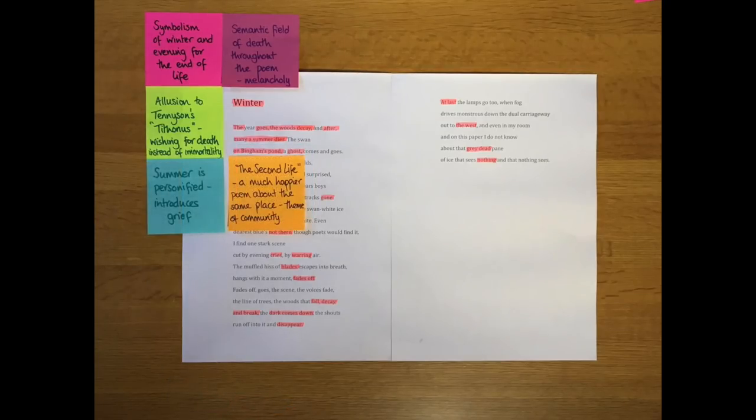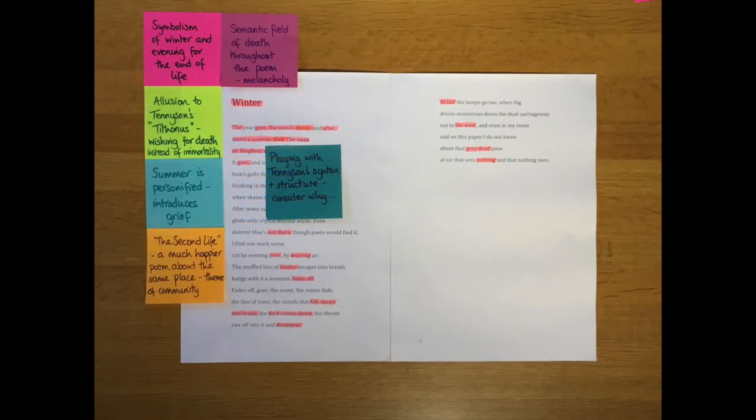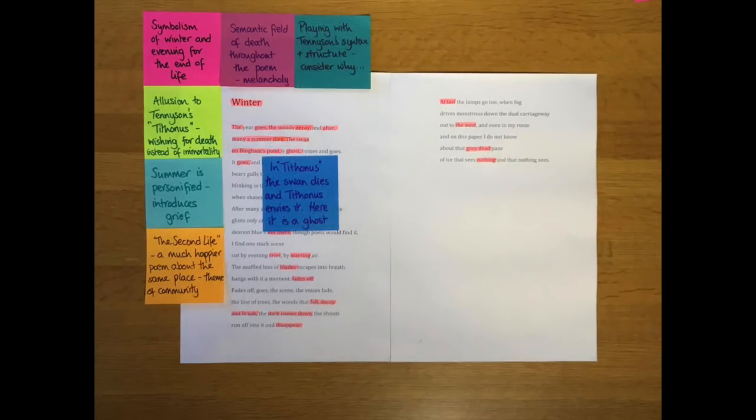He then talks about the swan on Bingham's pond. So he's taken that swan from Tennyson's sentence and he runs it on into something new. He then moves on to talk about the swan being a ghost. In Tythonus the swan dies and Tythonus envies it. But here it's a ghost and it comes back. It comes and goes just like a ghost reappears and haunts.